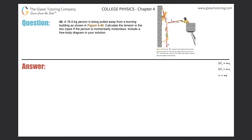Number 42: a 76-kilogram person is being pulled away from a burning building as shown in figure 4.40. Calculate the tension in the two ropes if the person is momentarily motionless. Include a free body diagram in your solution.